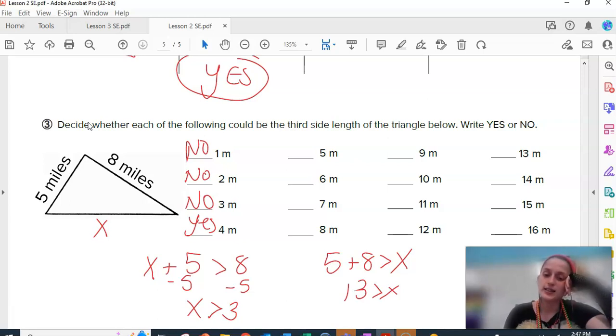5, 6, 7, 8, 9, 10, 11, 12, 13. Wait, is 13 smaller than 13? No. Is 14 smaller than 13? So, each of these should end up with a yes or a no.